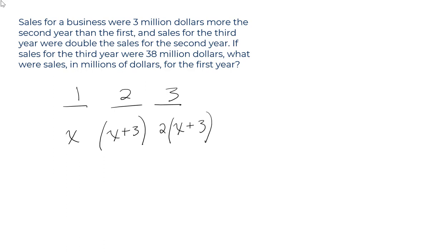So we haven't written any equations yet — we're just organizing the information that we're given. Now, whenever you read a sentence, you always want to ask: can I turn this into an equation? This sentence here — if sales for the third year were 38 million dollars — key word here: the word "were." Were, was, is — that tells you we want an equal sign. Two times the quantity X plus three equals something. It equals 38 million dollars.